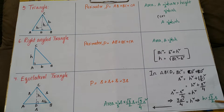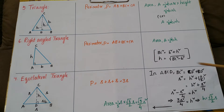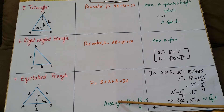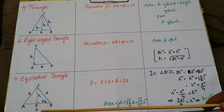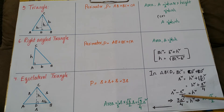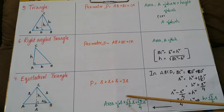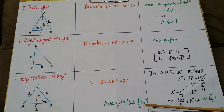Solving for h: h = √(3s²/4) = (√3/2) × s. Now calculate the area of the equilateral triangle: A = ½ × base × height = ½ × s × (√3/2) × s = (√3/4) × s². So the area formula for an equilateral triangle is √3/4 × s².